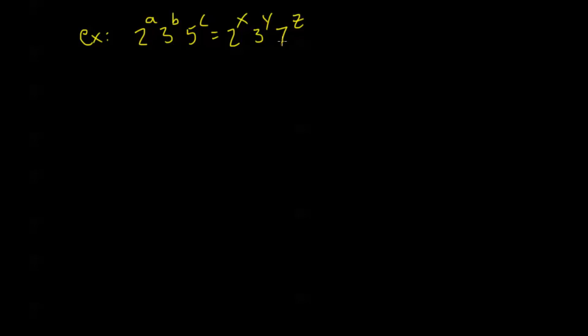3 doesn't divide 2, 7 doesn't divide 2, because 2 is prime. It's only divisible by 2 and 1. So because of that, I get that a is going to be equal to x. Whatever a is, x has to be the same thing for these numbers to be equal. Similarly, because 3 is the only thing here that can divide 3, I get that b is equal to y.